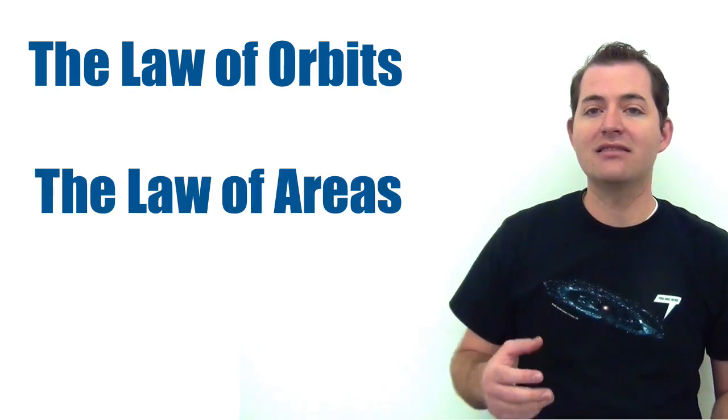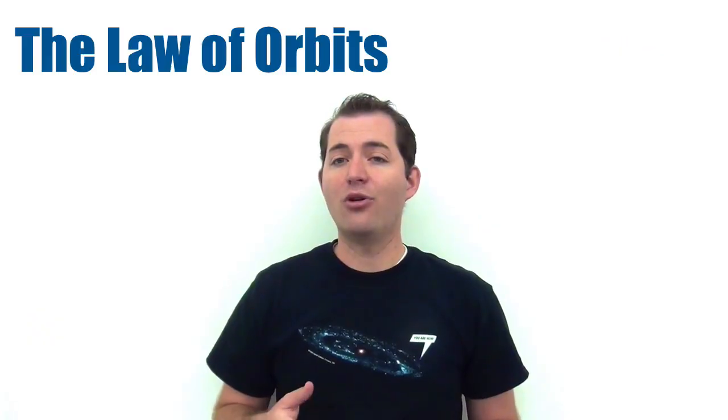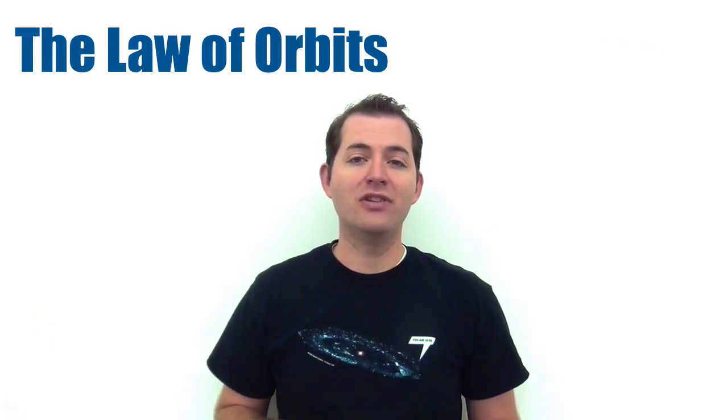Kepler's three laws of planetary motion are the Law of Orbits, the Law of Areas and the Law of Periods. The Law of Orbits states that all planets move in elliptical orbits with the sun at one focus.